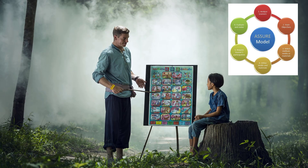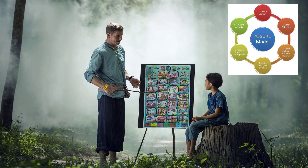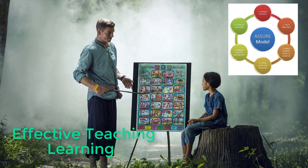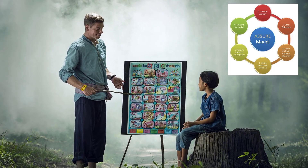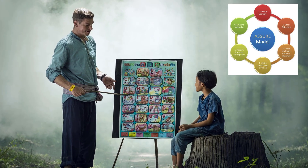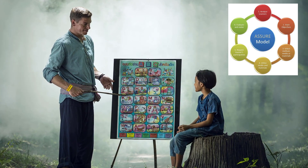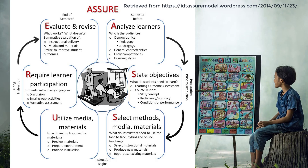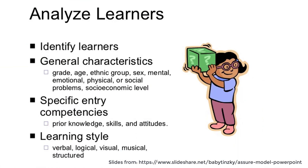The ASSURE model is an instructional design model that aims to enable more effective teaching and learning. It also helps instructional designers effectively integrate media or technology into the instructional program. The figure shows a general overview of the ASSURE model. ASSURE is an acronym representing the various phases in the model. The first phase involves getting to know the learners, their characteristics and competencies, including present knowledge and skills, which would help in selecting the best strategies to optimize learning.